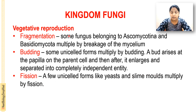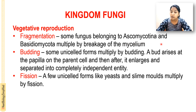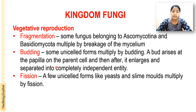From the slide: some fungi belonging to Ascomycotina and Basidiomycota multiply by breakage of mycelial cells, and the broken mycelium grows into a new fungus. In budding, unicelled forms like yeast form a small protuberance or swelling at the cell surface, which enlarges, acquires the proper size, and separates from the parent cell into an independent cell. In fission, unicelled forms like yeast and slime molds multiply by fission.